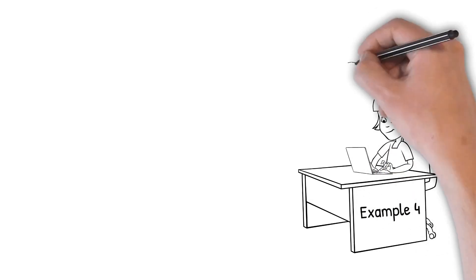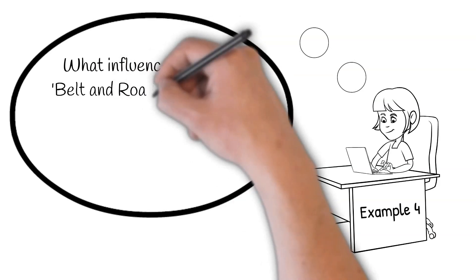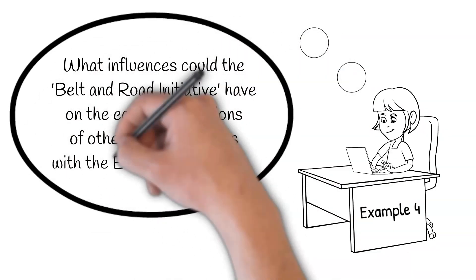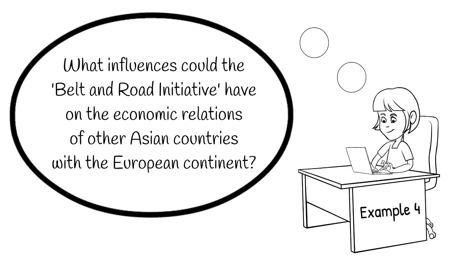Let's move on to one final example: 'What influences could the Belt and Road Initiative have on the economic relations of other Asian countries with the European continent?' If you're worried about the scope, you'd be right — which Asian countries are we talking about, and the European continent is broad indeed. But most importantly, this question cannot currently be answered because of the modal verb 'could.' Almost anything could or might happen. Changing it to 'will' doesn't help either, because future-oriented predictions are hard to make. In complex systems like human societies, their politics and economics, prediction is essentially impossible.